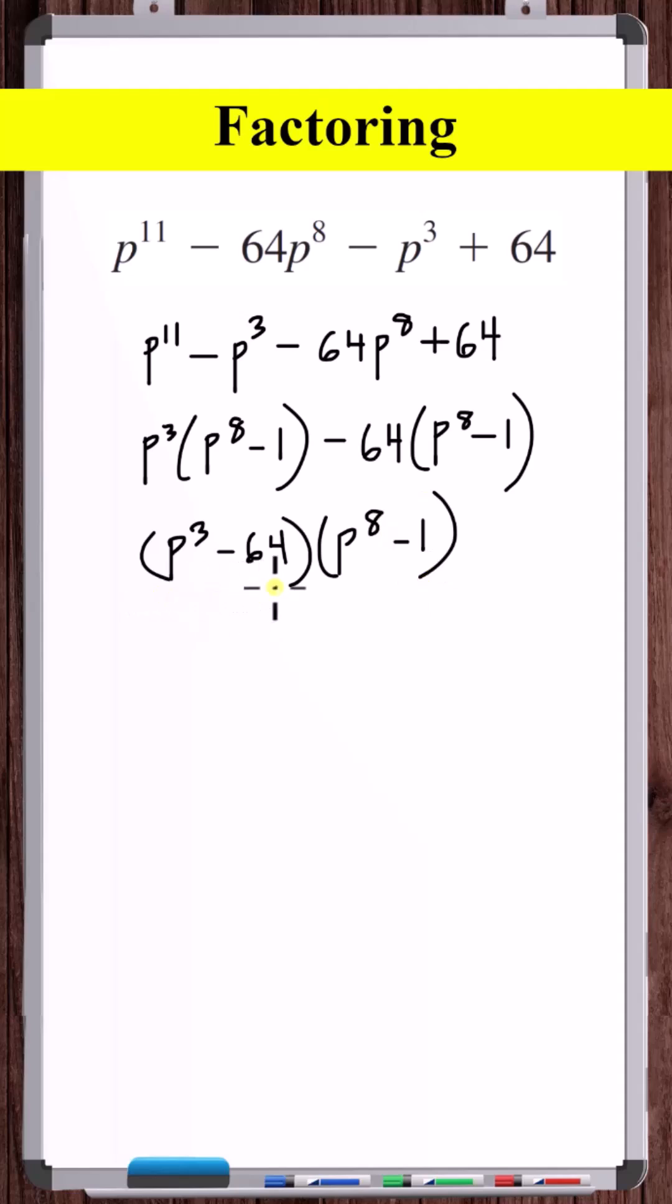So here we've got a difference of two cubes, p cubed and four cubed, and here we've got a difference of two squares, p to the fourth squared and one squared.